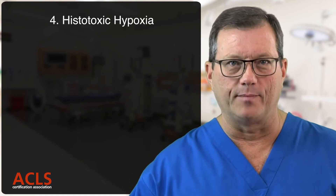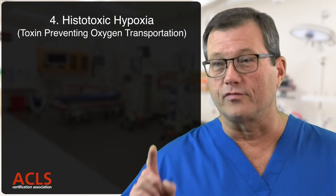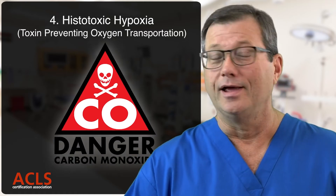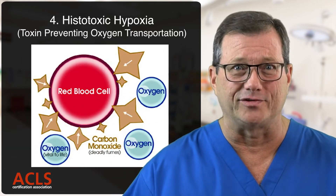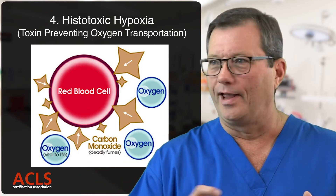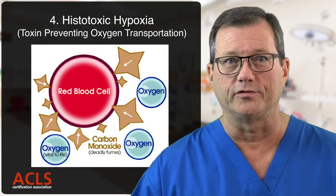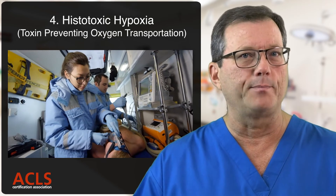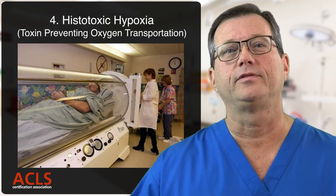Last, histotoxic hypoxia. This is a case where they may have sufficient oxygen in the bloodstream, they may have sufficient hemoglobin, but there's a toxin preventing the hemoglobin from binding and picking up oxygen. A great example: carbon monoxide poisoning. The carbon monoxide has an affinity for the hemoglobin about 256 times greater than oxygen, so the hemoglobin picks up the CO and won't pick up the oxygen. We have to fix the underlying problem — the toxic CO poisoning. Move the patient to fresh air, start oxygen therapy immediately at 100% oxygen, and consider hyperbaric treatment if they're still not turning around. Histotoxic hypoxia: there's a toxin preventing the hemoglobin from picking up oxygen.